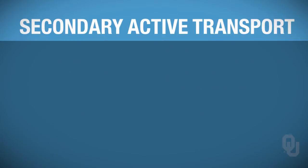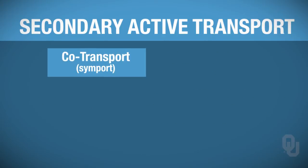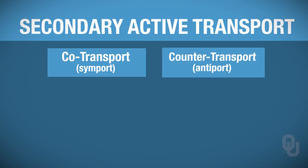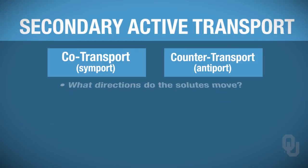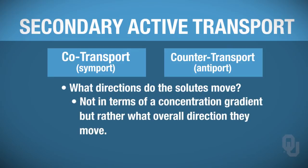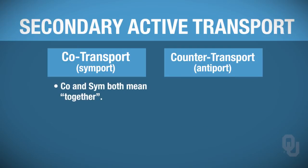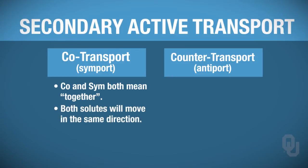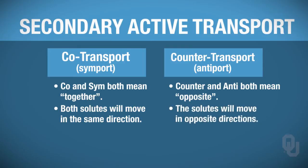There are two different types. We have co-transport, also called symport, and countertransport, also called antiport. When thinking about these names, consider what direction the solutes move—not in terms of their concentration gradient, but their overall direction. 'Co' and 'sym' both mean together, so both solutes move in the same direction. Countertransport or antiport means opposite, so the solutes move in opposite directions.